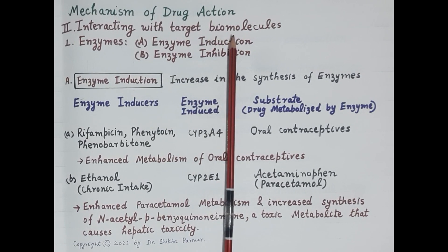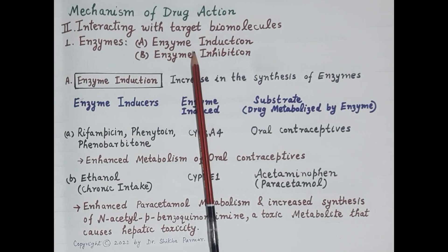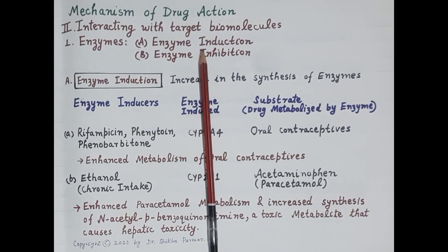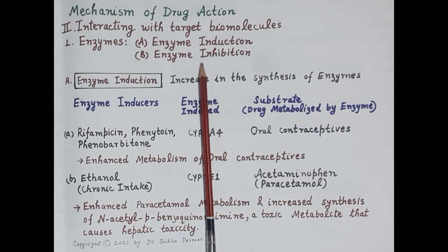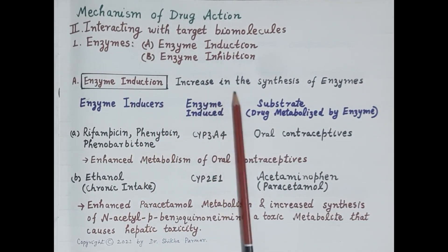As discussed earlier, the majority of drugs produce their action by interacting with target biomolecules — usually proteins — namely enzymes, ion channels, transporters, and receptors. Let's first talk about enzymes as targets for drug action. Drugs can target an enzyme and cause either enzyme induction or enzyme inhibition. A drug can be an enzyme inducer and induce increased synthesis of an enzyme, while some drugs inhibit the metabolic activity of enzymes and are called enzyme inhibitors.